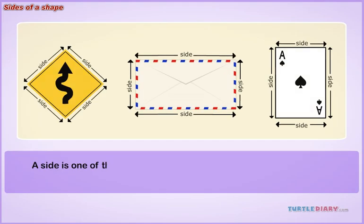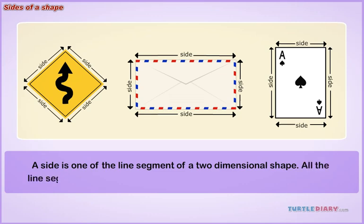A side is one of the line segments of a two-dimensional shape. All the line segments join together to form the closed two-dimensional shape.